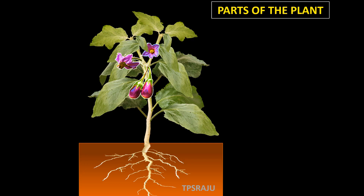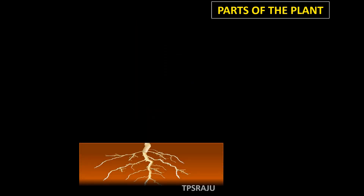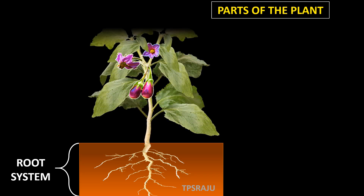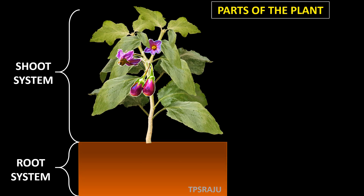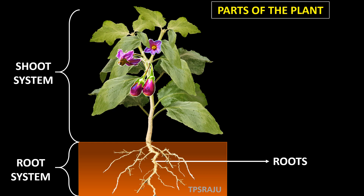Usually a plant consists of two main parts: root system and shoot system. The underground part of the plant is known as the root system, while the aerial part of the plant is known as the shoot system. Root system consists of a main root called tap root, and the rootlets that grow from the tap root are known as lateral roots. So, root system consists of roots.